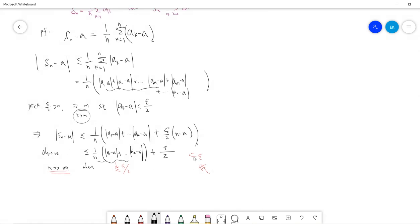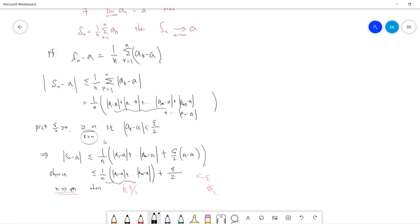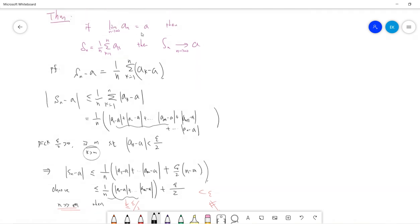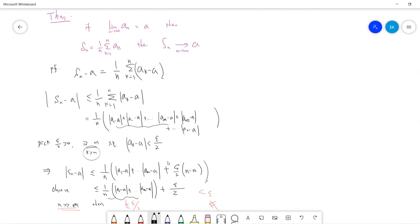now means that the total was less than epsilon. So we proved the idea. So basically, we first use the converged property of original AN to bound the first M term and the final, sorry, the bound bound the last M up to N term. And for the first remaining term, we use this 1 over N to suppress.